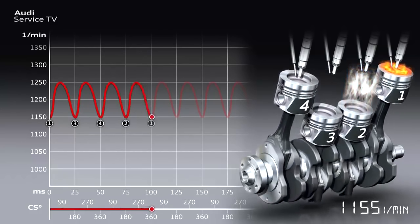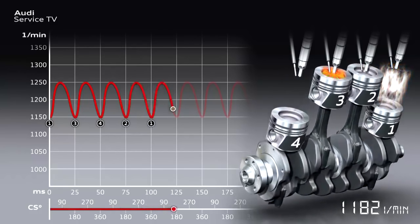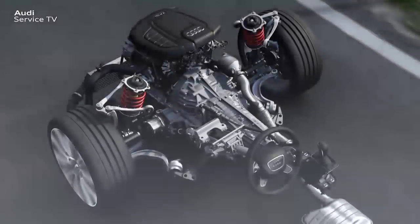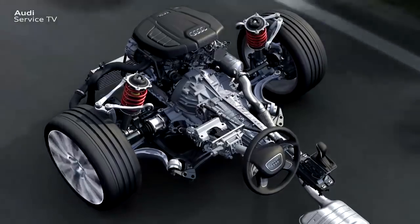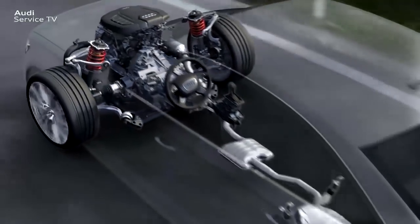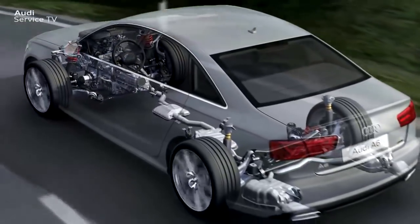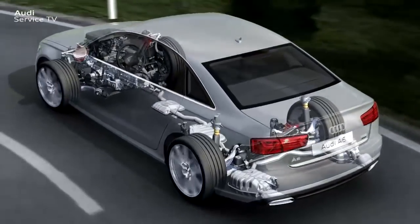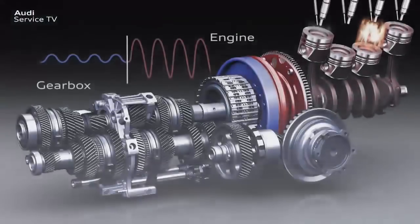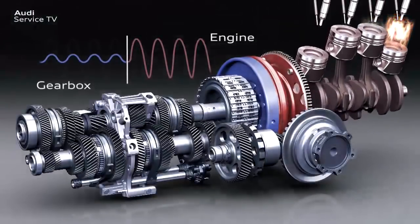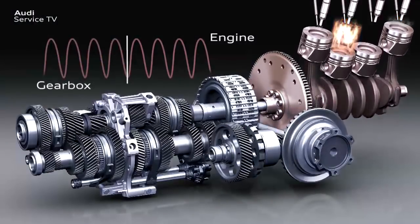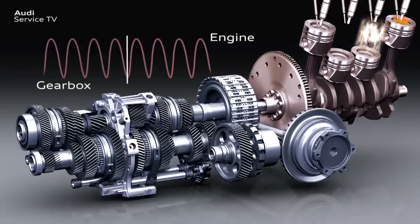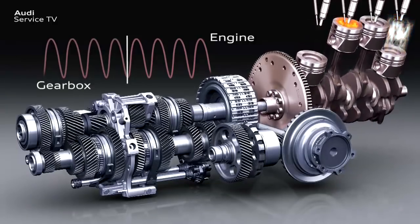If these torsional vibrations are transferred to the gearbox without being damped, resonance vibrations arise in the gearbox and drivetrain. In turn, these resonance vibrations cause boom and humming noises or gear rattle. Higher resonance vibrations can also damage the components in the gearbox and drivetrain in the long term. Without appropriate damping of torsional vibrations, driving comfort at low engine speeds is unacceptable and low engine speed fuel-saving driving is not practical.